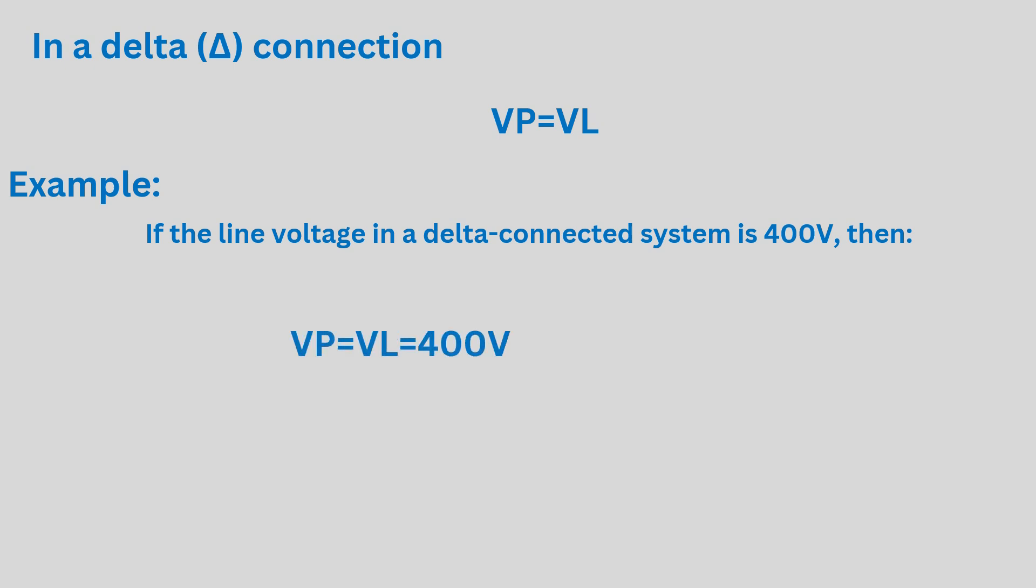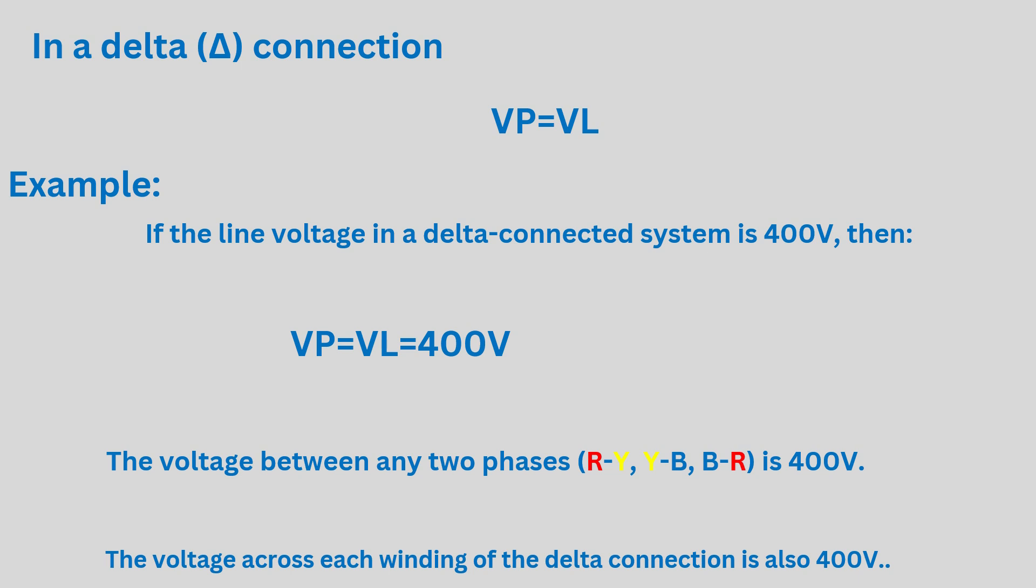This means the voltage between any two phases, R-Y, Y-B, B-R, is 400 volts. The voltage across each winding of the delta connection is also 400 volts.